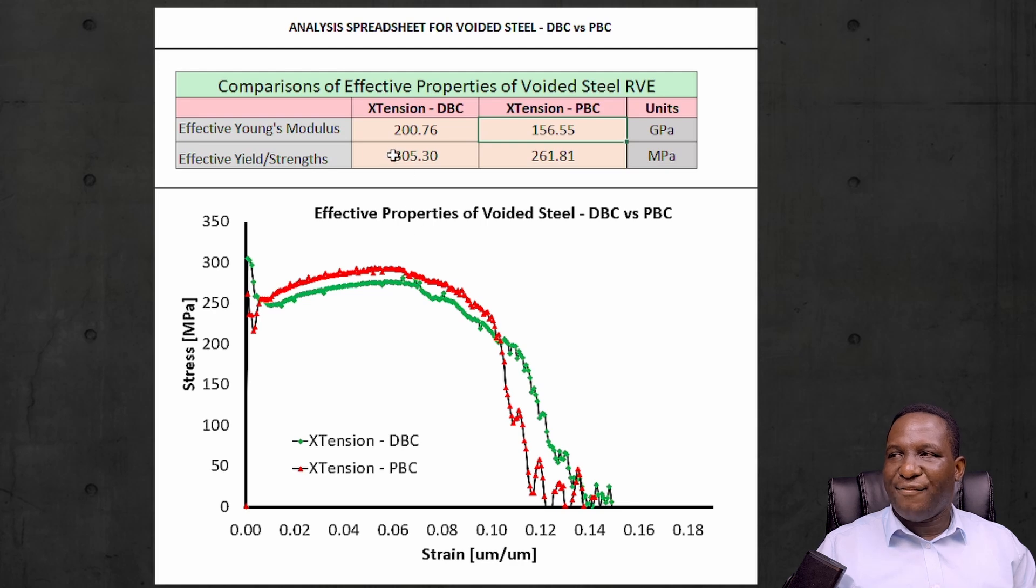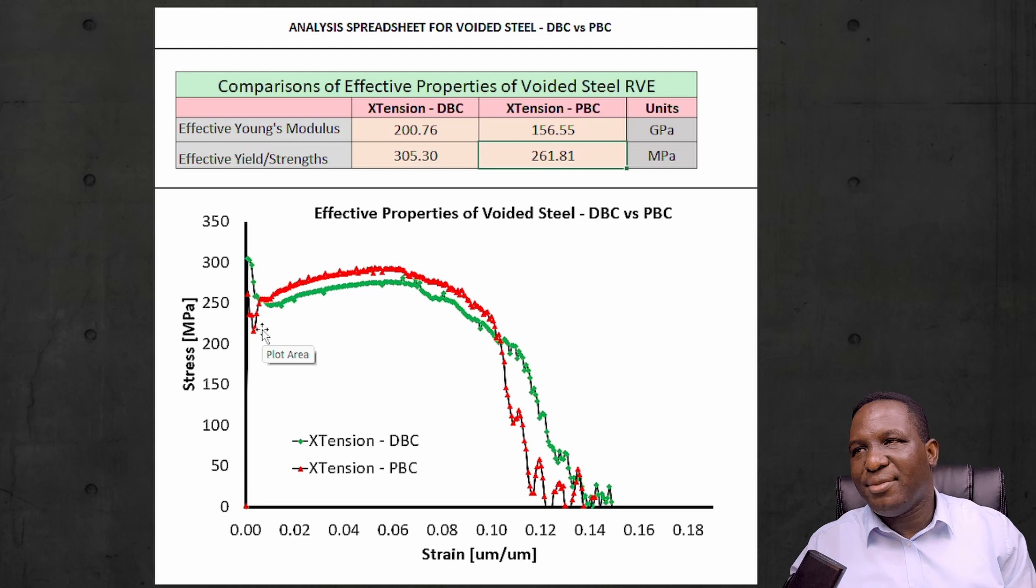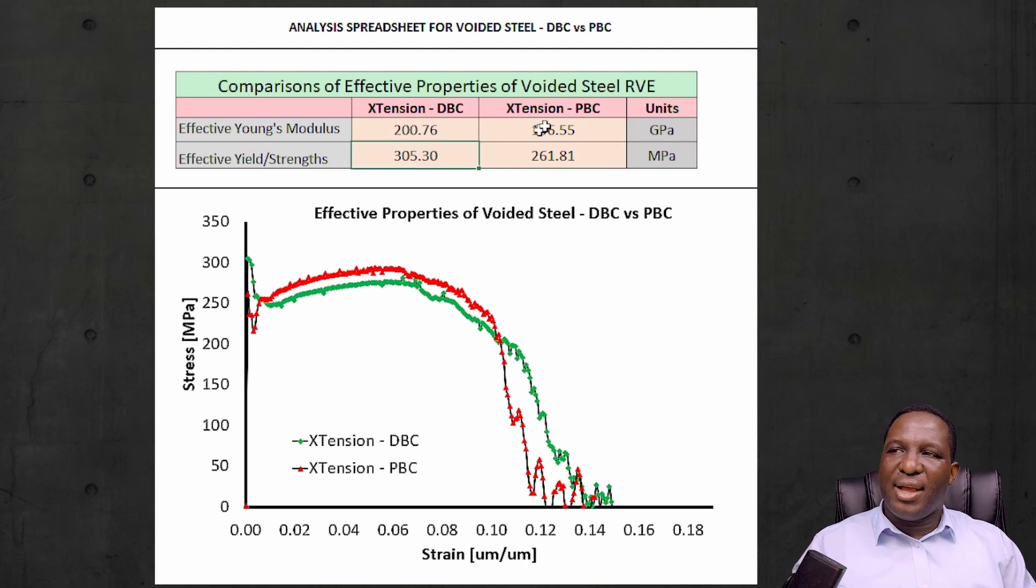If you then look at the effective yield strength, which is the ultimate tensile strength of this material, again with the DBC you're getting 300, with the PBC you're getting a little bit lower than that. What this is basically saying is this is the maximum value in the model. For this material, its ultimate tensile strength in the yield region is probably around 300 megapascals. So the DBC is also doing a very good job for this compared to the other. And remember, this is just only one simulation.